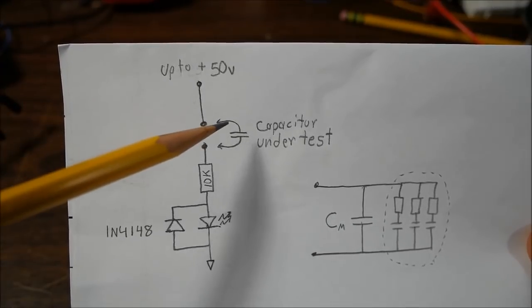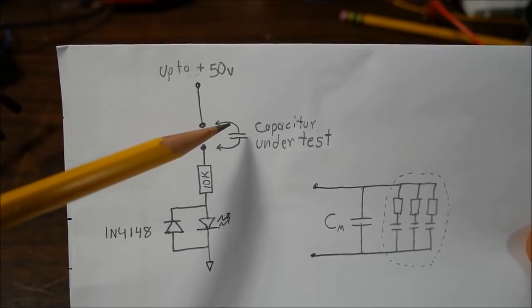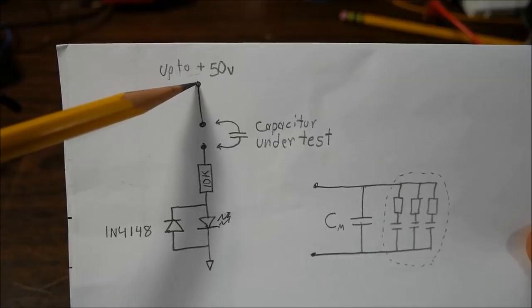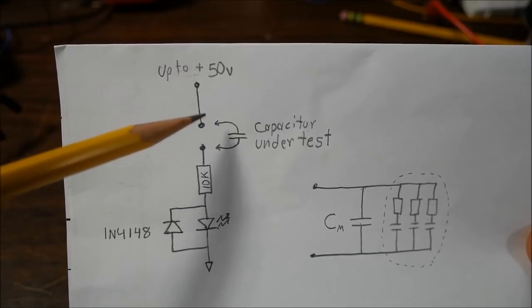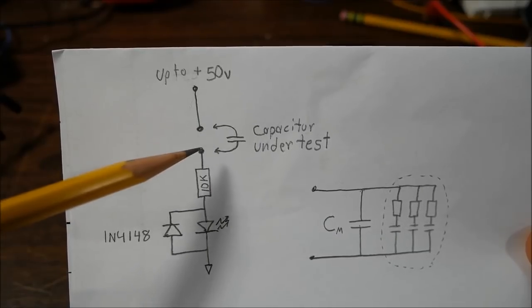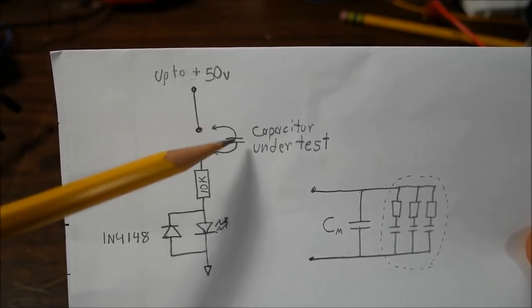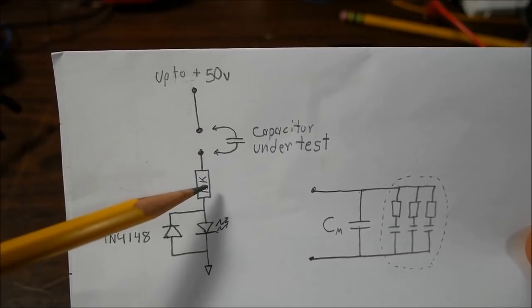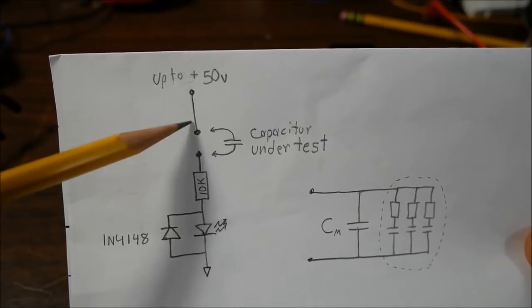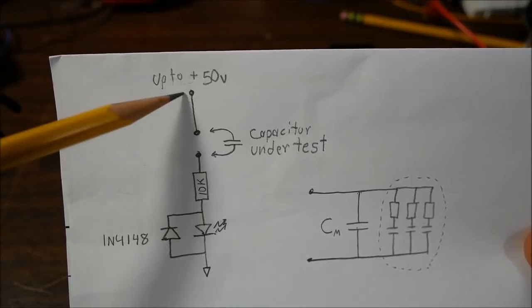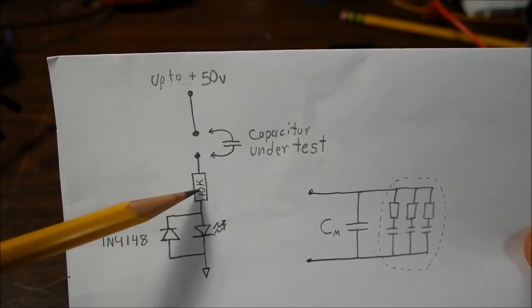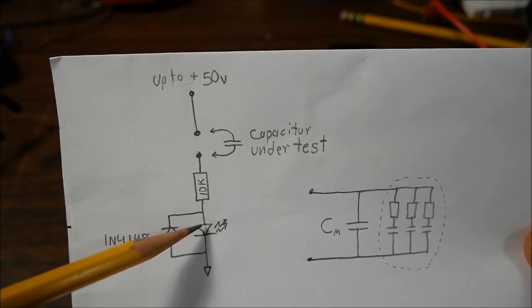For example, if you're testing a capacitor that's rated 16 volts, you want to make sure you drop the supply voltage down so you're not exceeding that 16 volts. So yeah, this point here is where you connect the capacitor across to test. This is a current limiting resistor for the LED. So when you connect a capacitor across here that's discharged, all of a sudden heavy current will flow and you don't want to damage this LED. So you limit the current, and of course this is the LED.